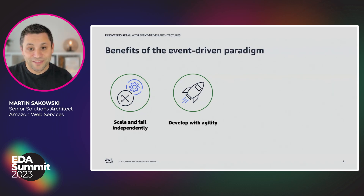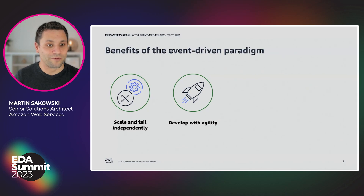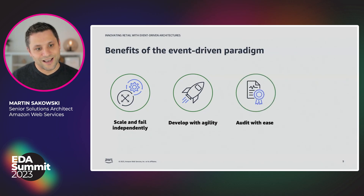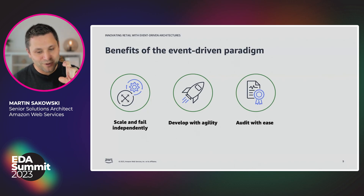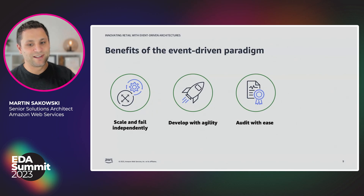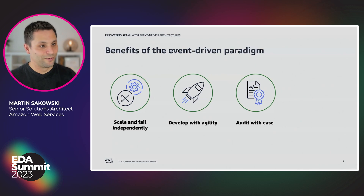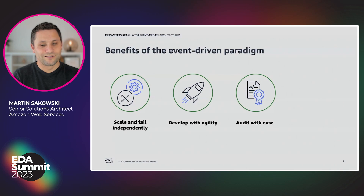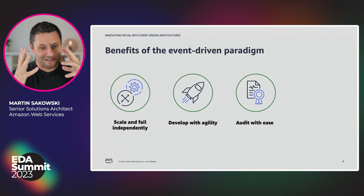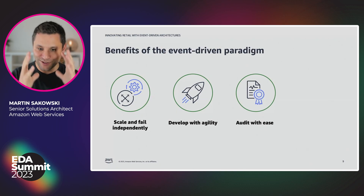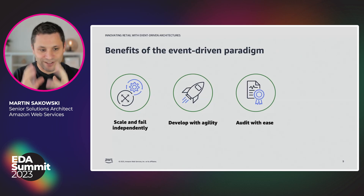This speeds up your development process, so you can develop with agility. Since the event router acts as a centralized location, you can easily audit your entire application. You can define policies to check and control who has access to which events — who can see that someone ordered a coffee machine, who can see the payment details, who can see the shipment address.